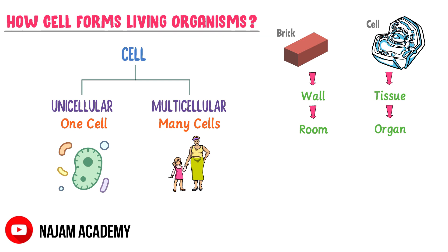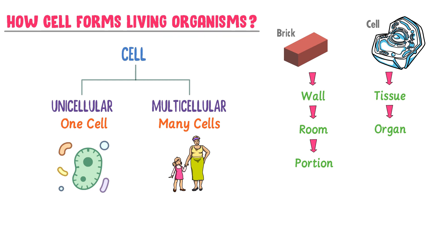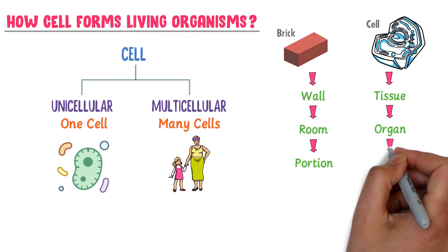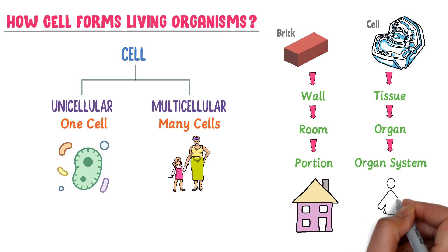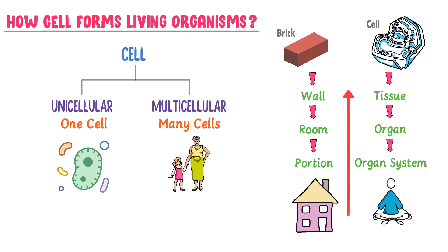When many rooms are joined together, they form one portion. Similarly, when many organs are joined together, they form an organ system like the digestive system. When many portions are joined together, they form a building. Similarly, when many organ systems are joined together, they form an organism like human beings. Thus, if you zoom in inside any living thing, you will see that they are all formed from cells, and we therefore say that cell is the basic unit of any life.